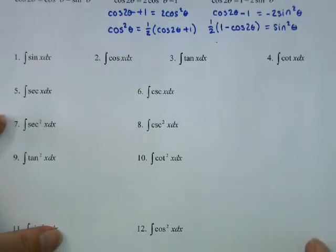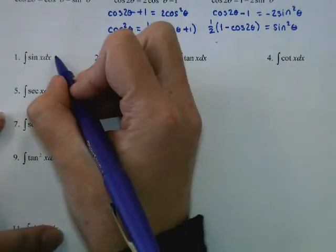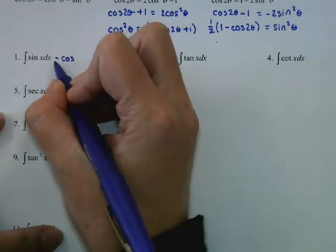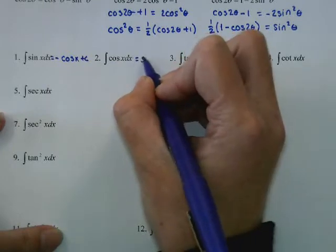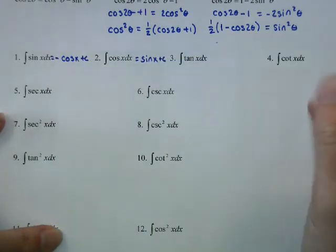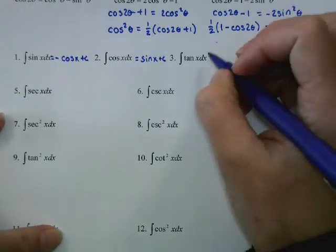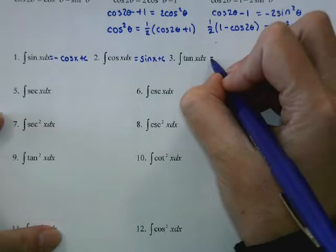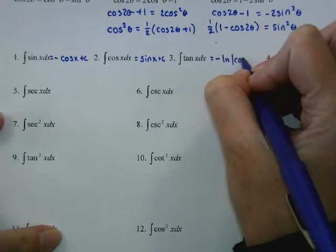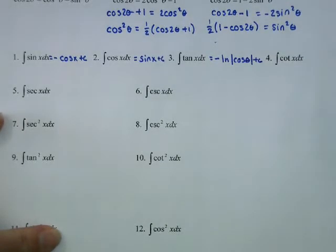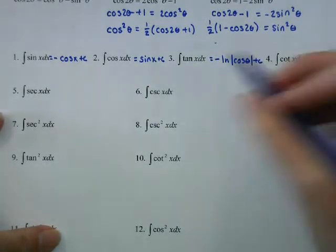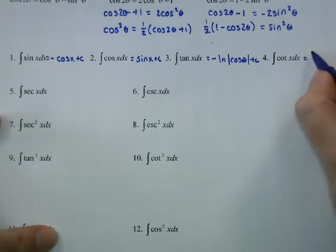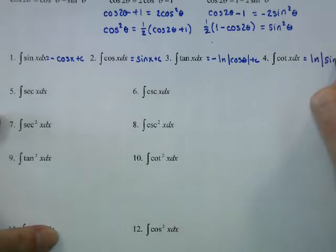Now let's look at some integrals. The integral of sine is negative cosine plus C. The integral of cosine is sine. The integral of tangent, using logarithms, is negative ln of cosine theta plus C. The integral of cotangent, which is cosine over sine, is the natural log of sine of x plus C.